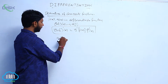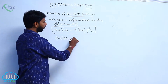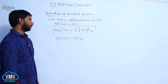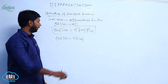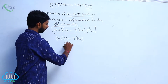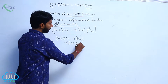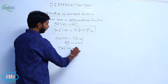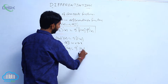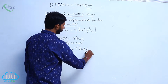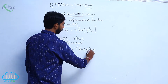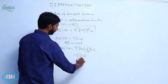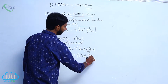That is, g circle f of x can be written as g of f of x, differentiated with respect to x. That is, g circle f whole dash of x is equal to g dash of f of x into d by dx of f of x. Since d by dx of f of x means f dash x, that gives g dash of f of x into f dash x.